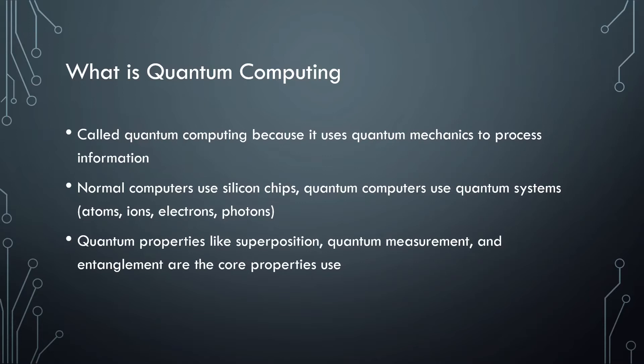The most central quantum properties used are superposition, quantum measurement, and entanglement. I will explain those in more detail next.